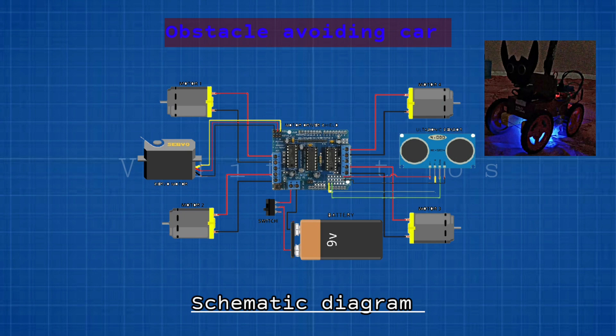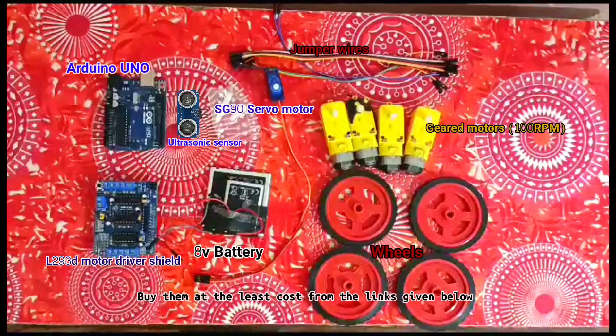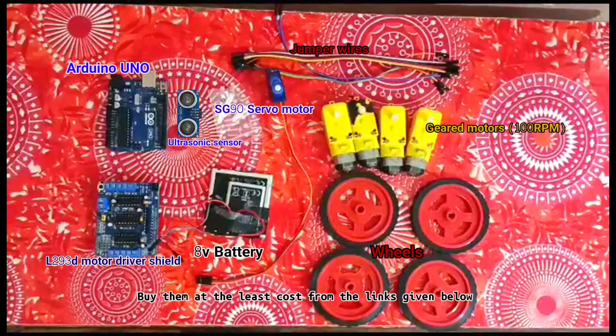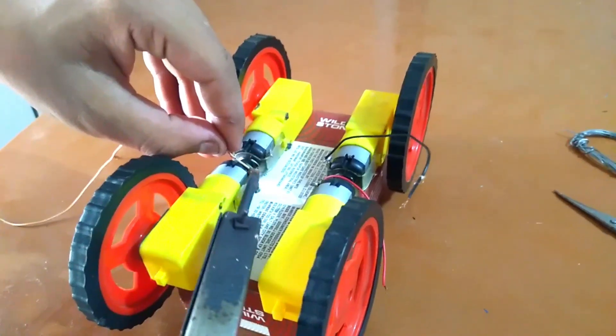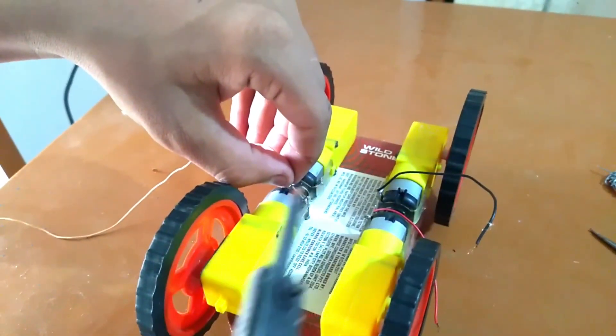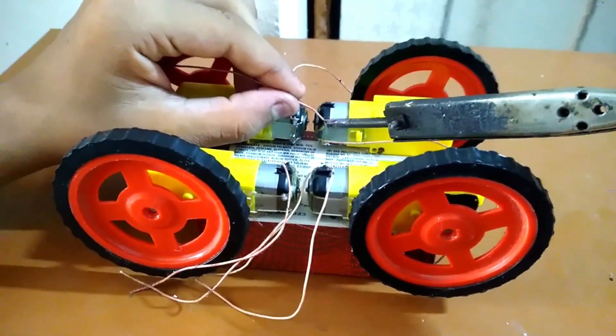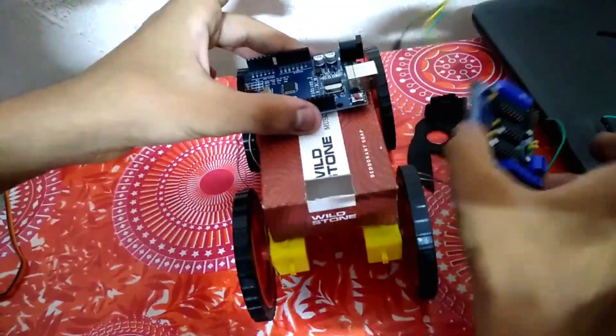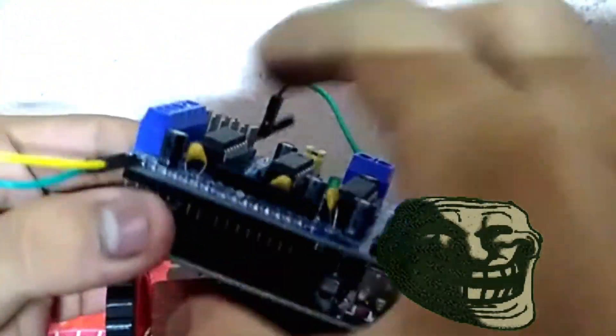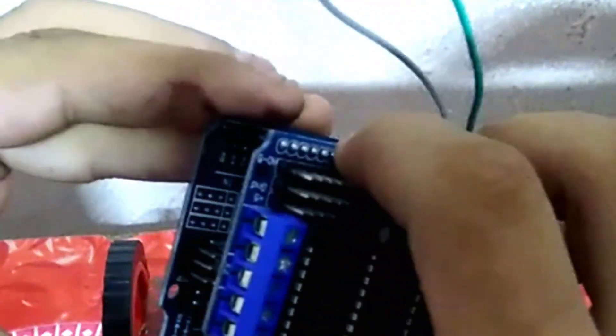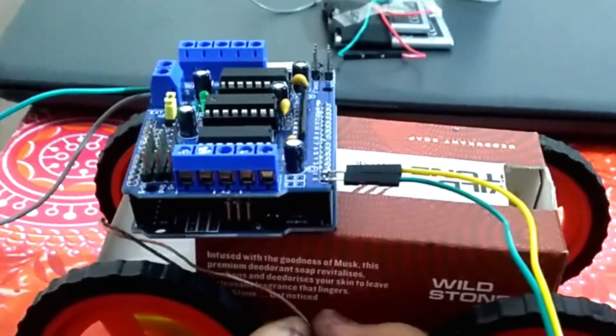So guys, this is the schematic diagram of our obstacle-avoiding car, and I've left the links in the description box to purchase all these components. You can find them at very cheap cost. As you all can see, I fixed all my wheels on my BO motors and now I'm soldering all my wires on my motors. After this, I took my UNO board and now I'm inserting my driver shield in the holes of my UNO board.